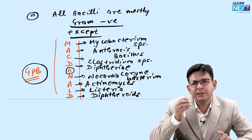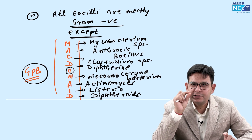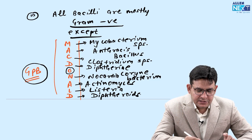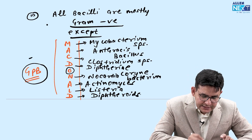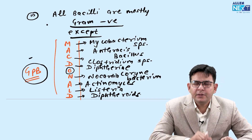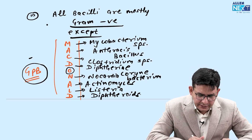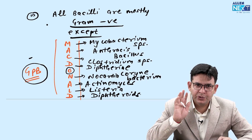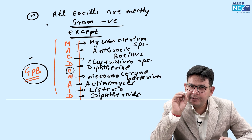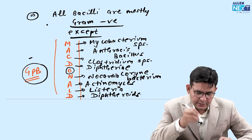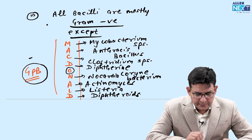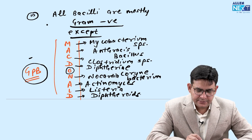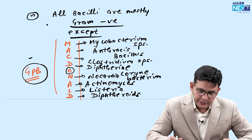Now let's understand the difference between cocci and bacilli. Cocci are like a dot — just like a full stop or pinpoint shape. Bacilli are rod-shaped — they look like a rod. This basic morphological difference you should know: cocci are pinpoint like a full stop, bacilli are rod-shaped.